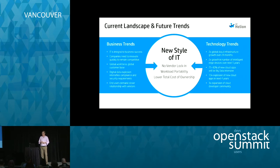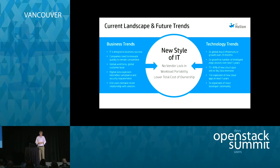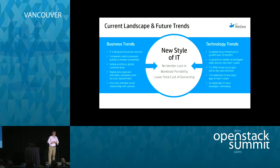On the technology side, there are massive explosions happening. Over the next two years, we're seeing a two to three times growth in global cloud infrastructure. We're seeing a massive amount of growth in intelligent edge services, anywhere from 50 to 80% increase in new cloud applications dealing with big data, and a huge expansion of both cloud apps and cloud development. When I talk about cloud, I'm talking about dynamic elastic infrastructure.